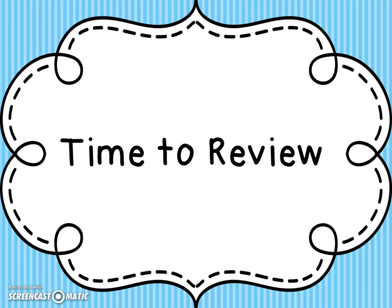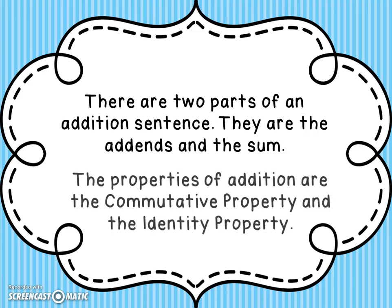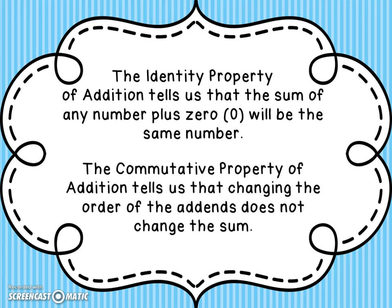Time for a review. There are two parts of an addition sentence: the add-ins, which are the numbers being combined, and the sum, which is the answer. The properties of addition are the commutative property and the identity property. The identity property tells us the sum of any number plus zero is that same number. The commutative property tells us that changing the order of the add-ins does not change the sum.